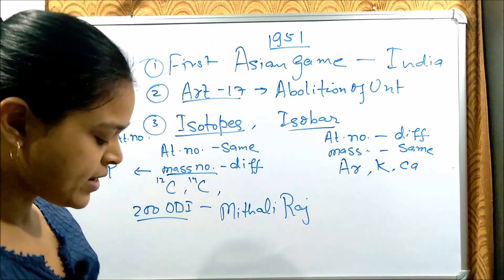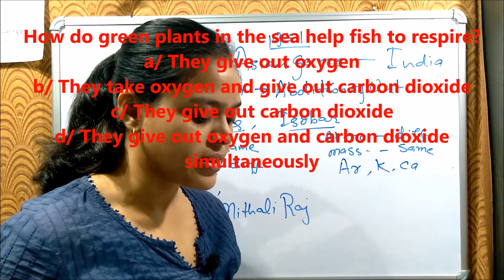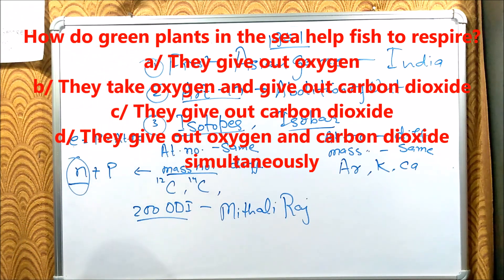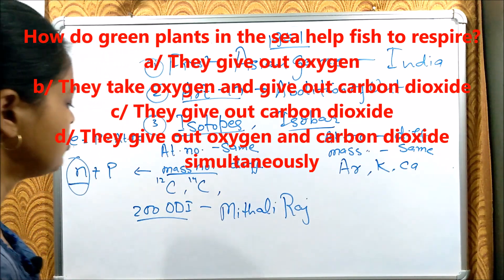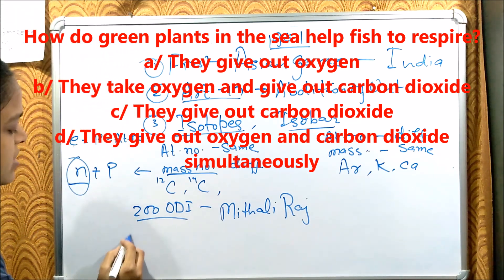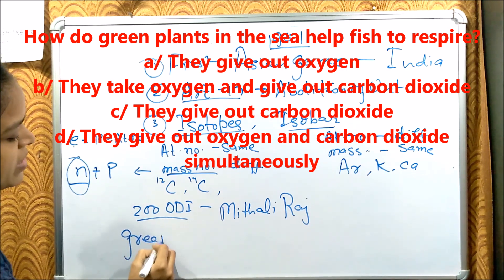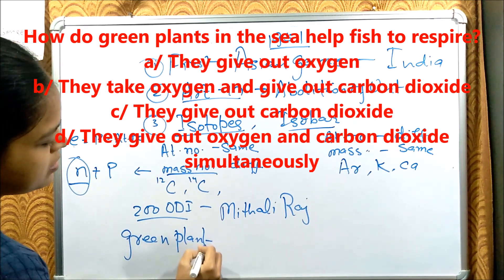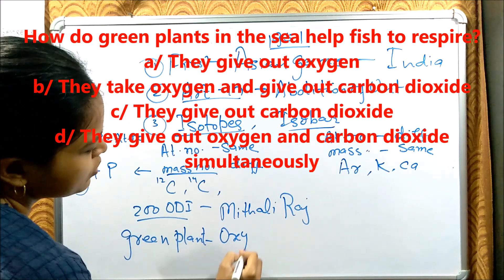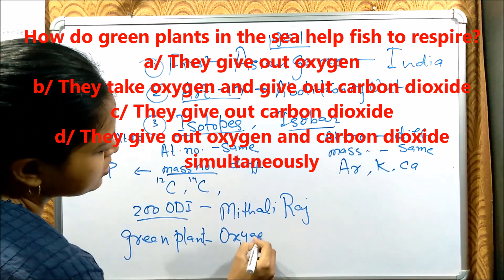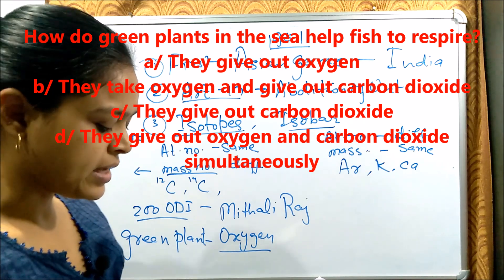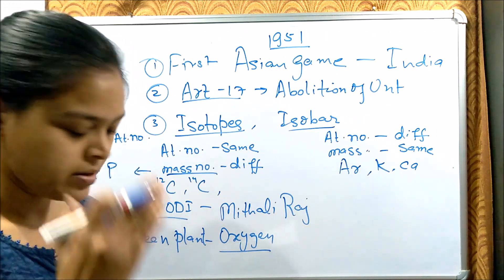Next question: How do green plants in the sea help fish to respire? What do we get from green plants? Oxygen. Green plants provide oxygen, which fish use to respire.